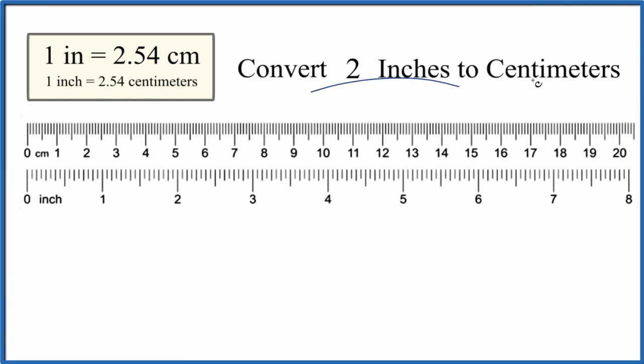Let's convert two inches to centimeters. We have centimeters on top and then inches here on the bottom on our rulers. So we go to two inches right here and that's about 5.1 centimeters right around there. So we can compare it that way.